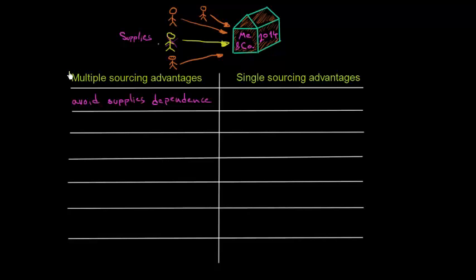On the other hand, if we have single sourcing advantages, one relationship to manage means that we can save some costs. We know that every relationship our company has to keep have some costs in matters of time, in matters of money. So thanks to single sourcing, we can save these costs.